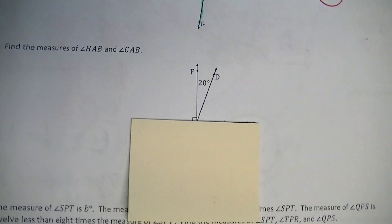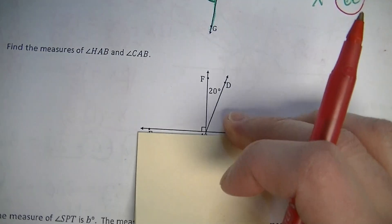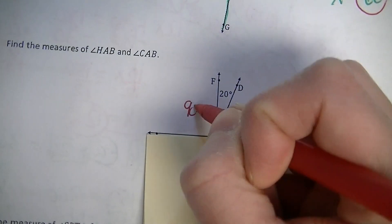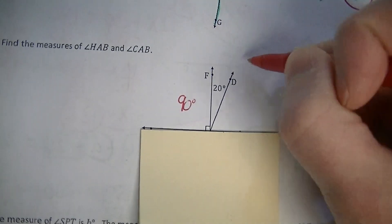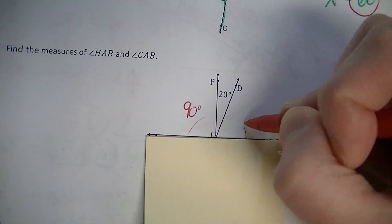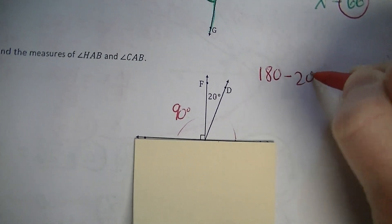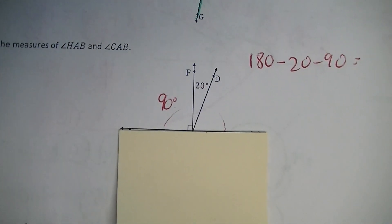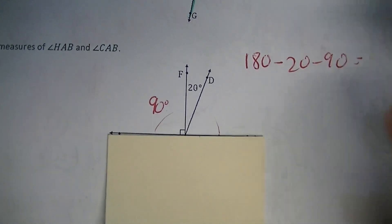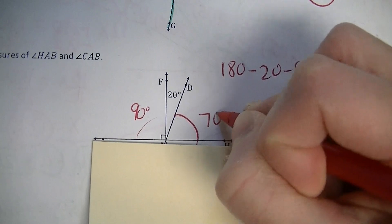I'm going to figure out this angle right there. I know that this one is 90 degrees because it has that box right there. To find this one, I know they have a sum of 180 degrees, so one way is to go 180 minus 20 minus 90, and that should be 70. So this angle right here is 70 degrees.